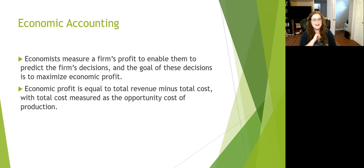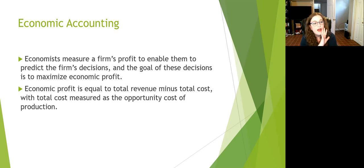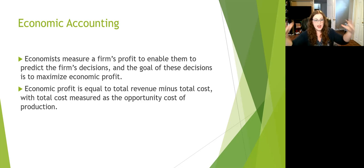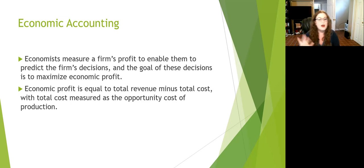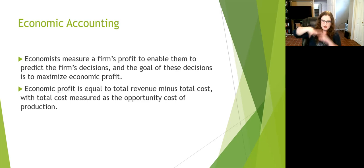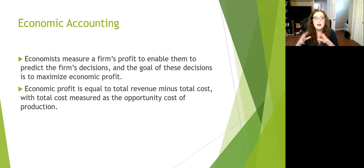Economic accounting is slightly different. We have money in, money out, and then we add in opportunity cost. The difference between accounting profit and economic profit is that economists care about your next best option — what else could I have done with my time instead of running this company? What else could I have done with this pizza oven? Economists measure a firm's profit to enable them to predict the firm's decisions, looking at money in, money out, opportunity costs, long-term goals, and whether we can actually maximize profit.